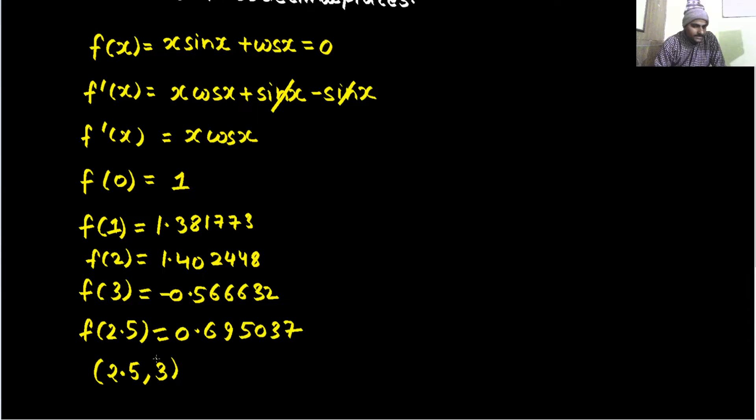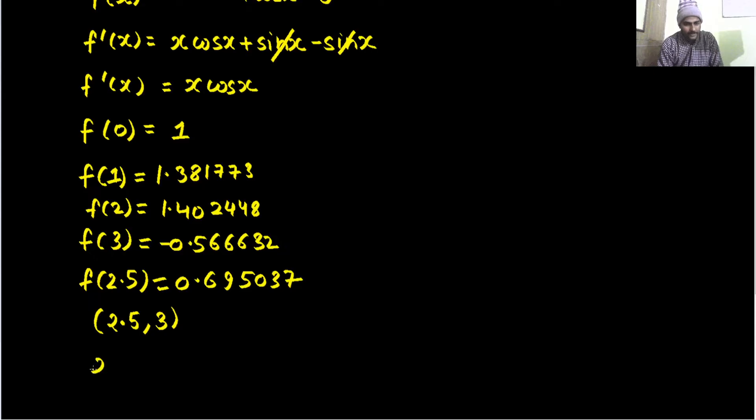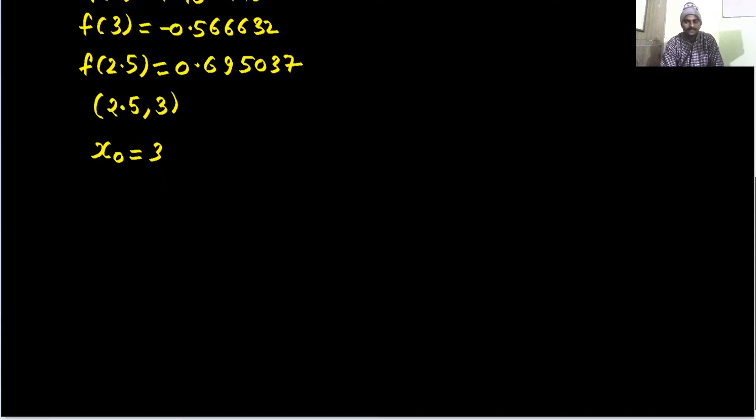Now, out of this interval at which value of x the root is closer to 0. At 3 it is closer to 0 because it is 0.56 there on negative side and it is 0.6 at 2.5. So the x naught we will choose here will obviously be 3 because at 3 it is closer to 0. So your x naught is 3.